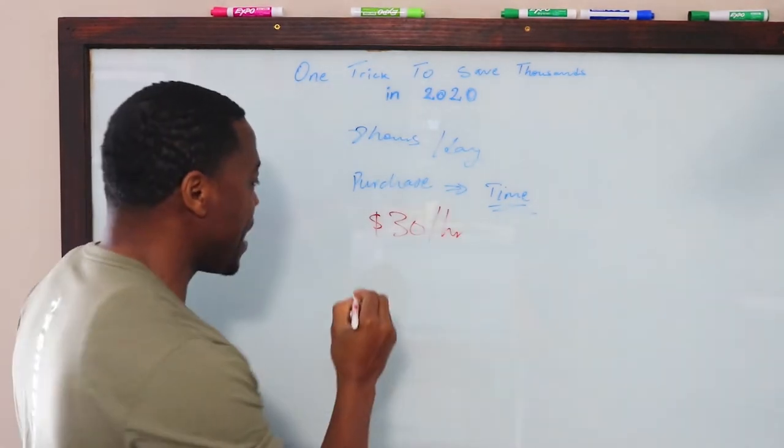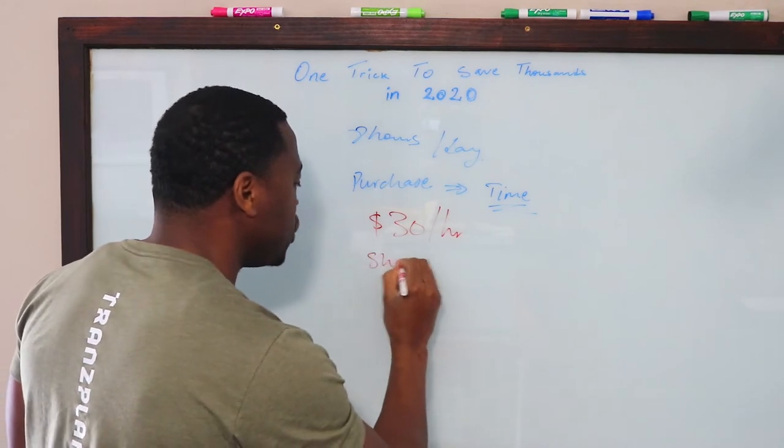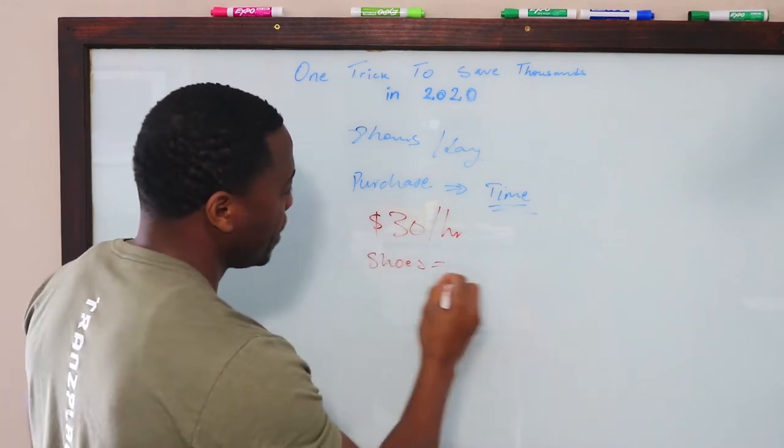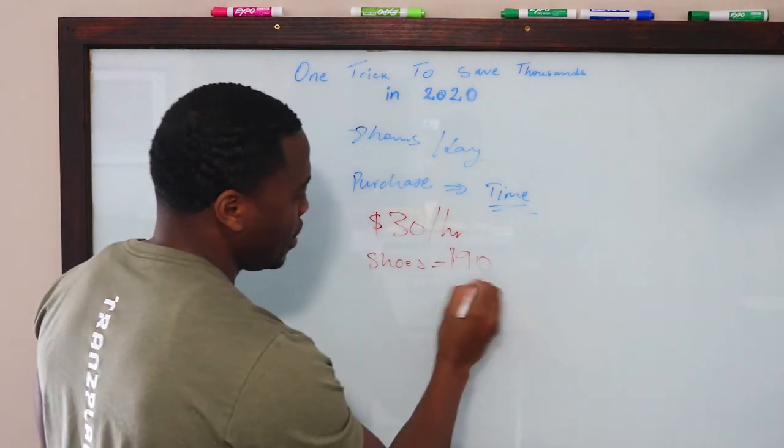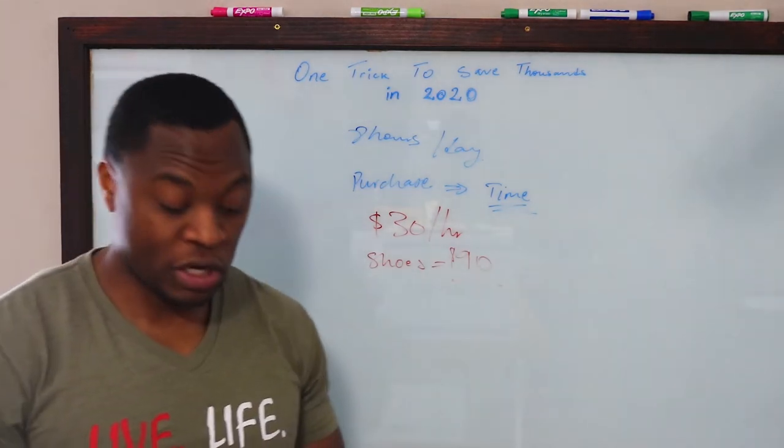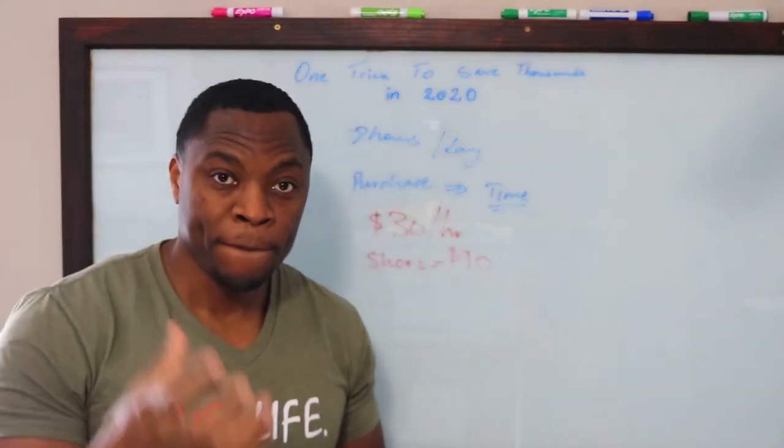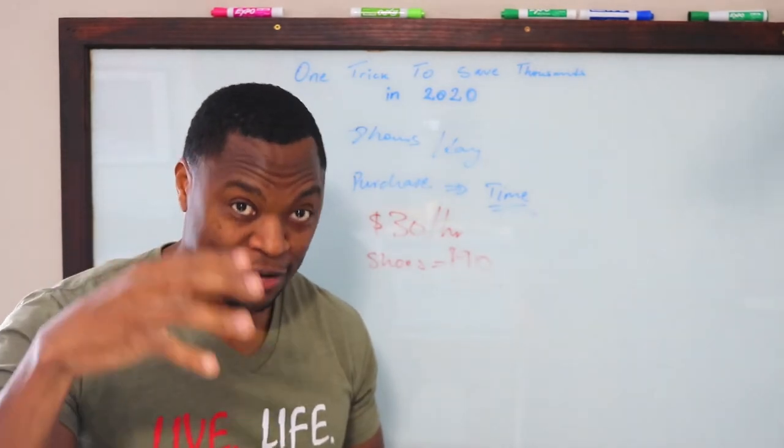And then you go out and buy a pair of shoes. Let's say you buy shoes for $90. So, you spend $90 on a pair of shoes.